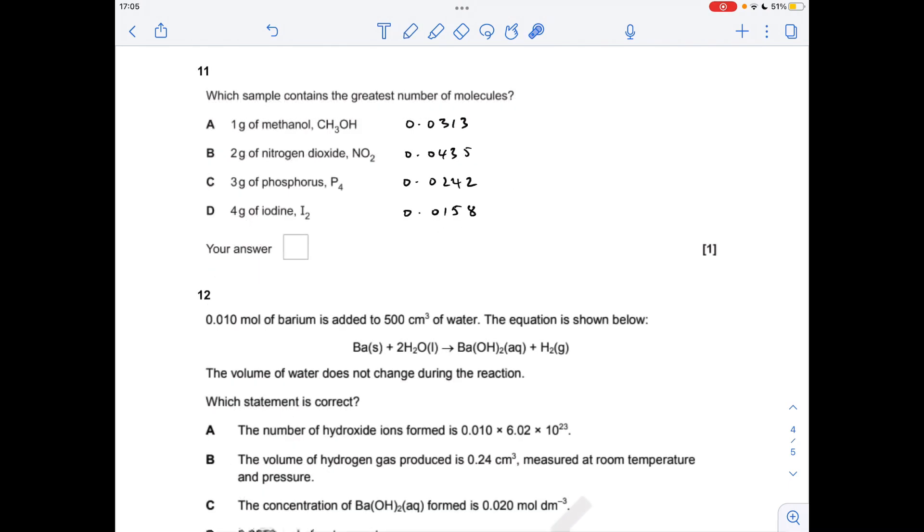Number 11. We've got to work out how many moles of each of these chemicals we've got, so it's just mass over MR. I've already done that, these are the moles. You can see that's the greatest number of moles. What we need to do if we had to calculate the number of molecules, you multiply all of these by Avogadro's number. We don't need to do that, just look at that and think right, that's going to give us the biggest number of molecules, so it's option B.